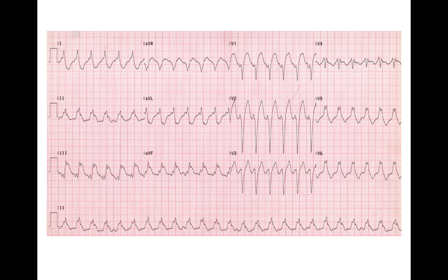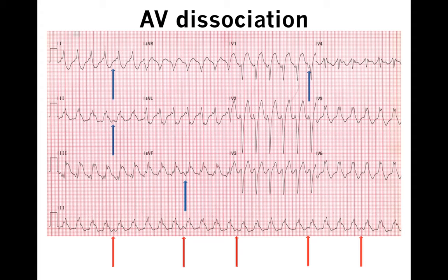This is an example of a wide complex tachycardia. In order to figure out if this is VT or SVT with aberrancy, we look for the features discussed. If you look closely, you see P waves within the tachycardia, but there are more QRS complexes than P waves. If there are more QRS complexes than P waves, this must be ventricular tachycardia.